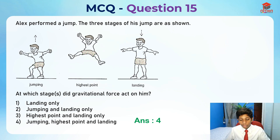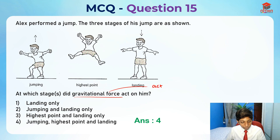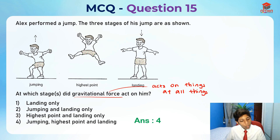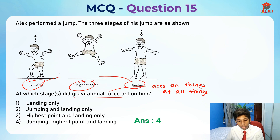Something that you need to take note of: gravitational force acts on people, acts on things at all times. So the only right answer would be jumping, highest point and landing — all joined together.